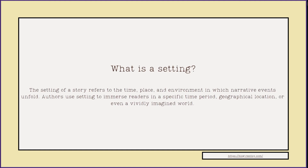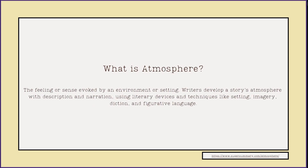There are two elements that are important to achieve this. The first is setting — the time, place, and environment in which narrative events unfold. Authors use setting to immerse readers in a specific time period, geographical location, and even a vividly imagined world. By choosing the setting, we've already begun the process of creating the second point: the atmosphere, the feeling or sense evoked by an environment or setting. Writers develop a story's atmosphere with description and narration using literary devices and techniques like setting, imagery, diction, and figurative language.